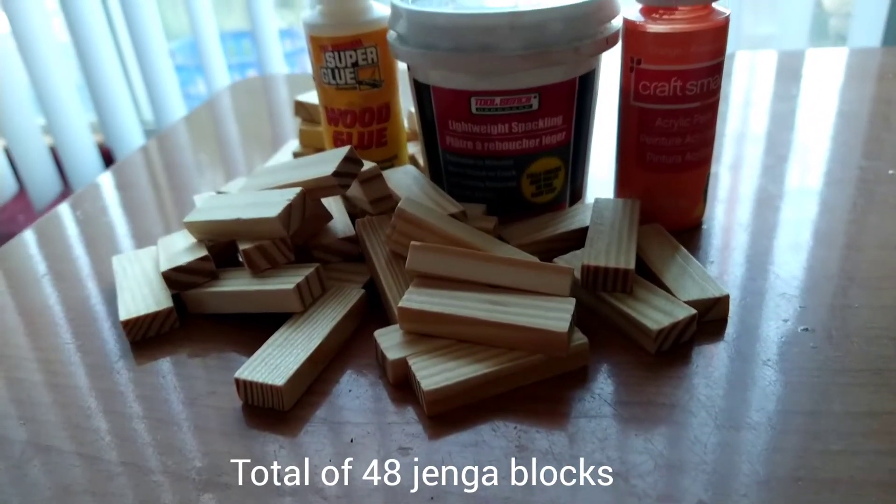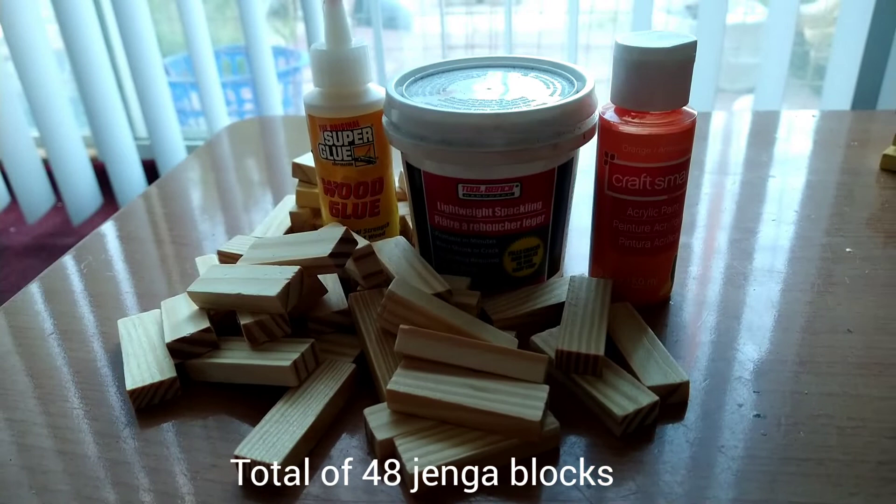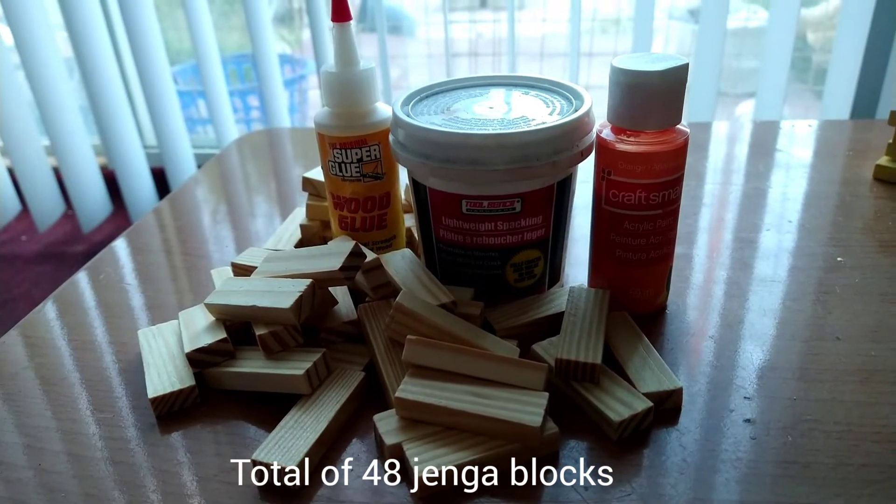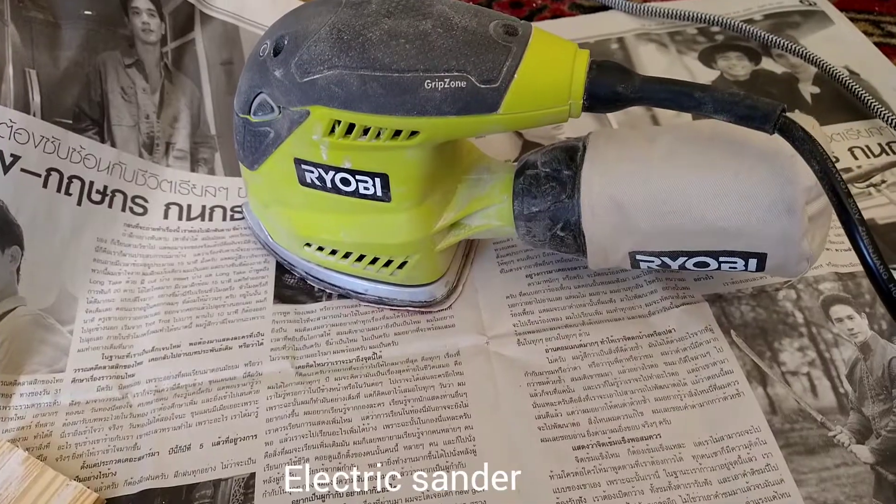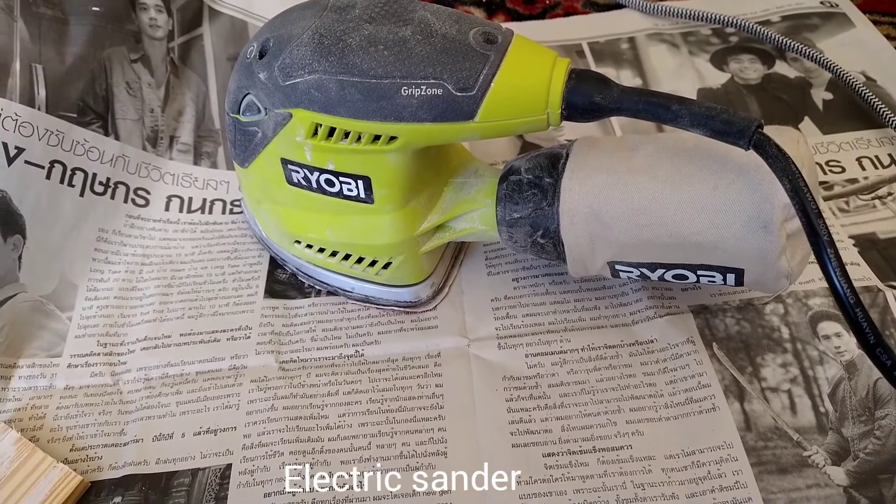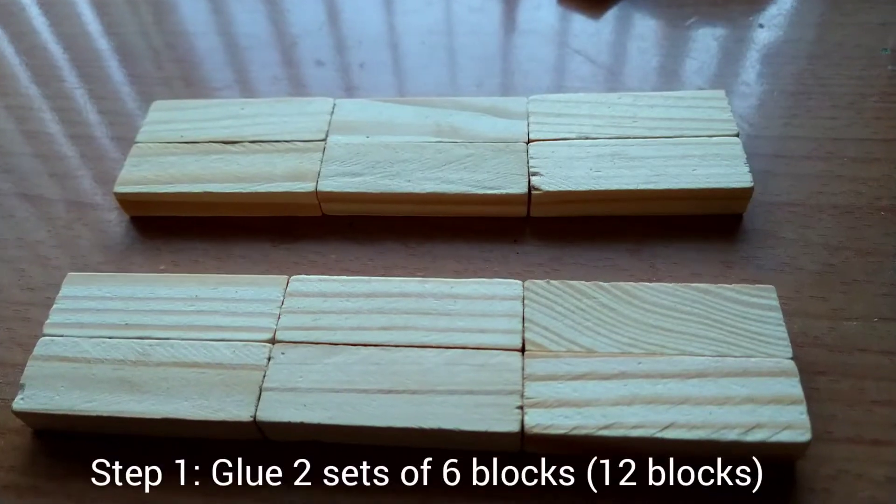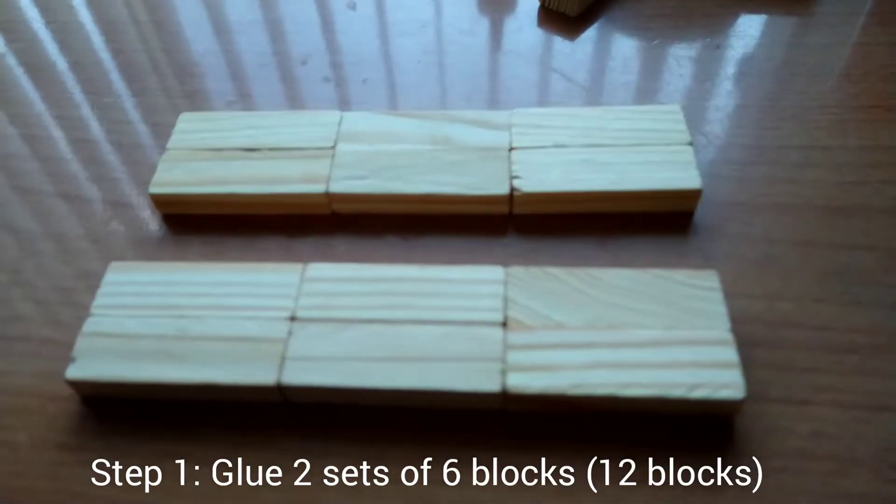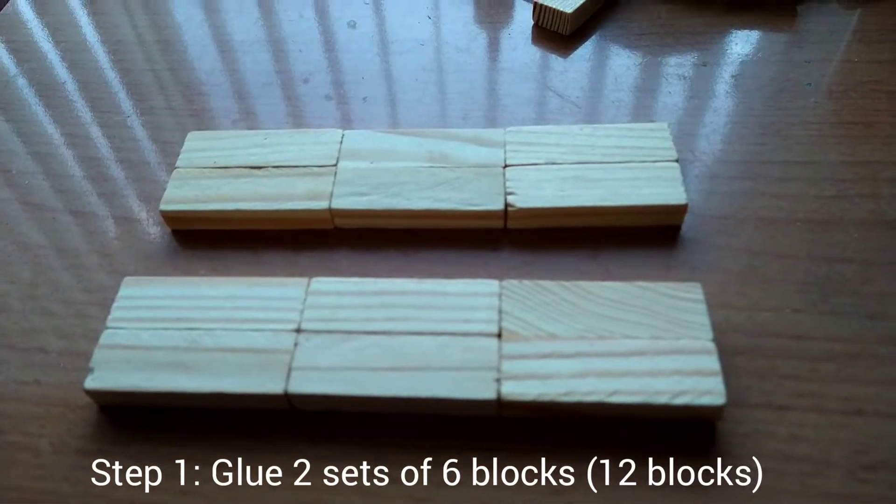For this project you will need a total of 48 Jenga blocks. Using an electric sander is highly recommended for this project. Step 1: Glue two sets of six blocks in this direction.